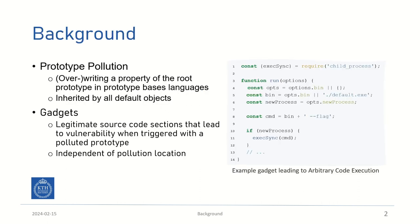Let's start with a quick background. In prototype-based languages, such as JavaScript, an object can define any other object as its parent. This is called its prototype. By default, every object defines the same root prototype. Prototype pollution refers to overwriting a property of this root prototype. Every object that inherits from it will thereby also inherit the overwritten property. This can lead to exploits in gadgets.